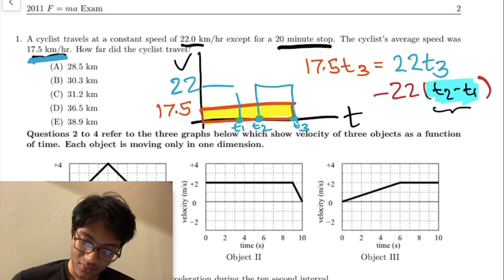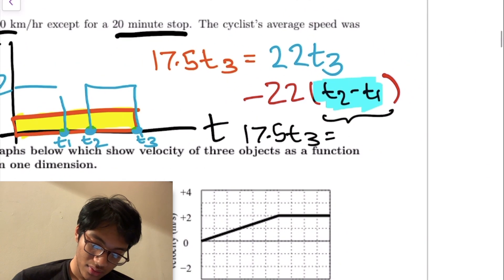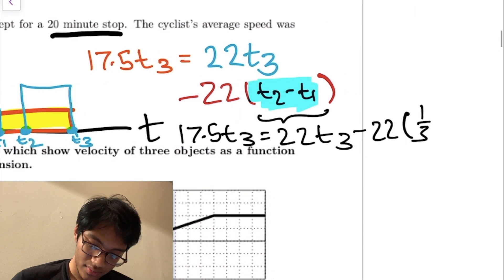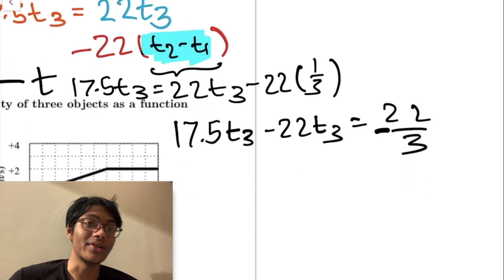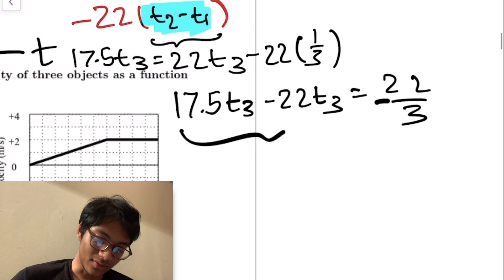That's going to give me 17.5 times t3 equals 22 times t3 minus 22 times one third. If I solve for t3, I'll get 17.5 t3 minus 22 t3 equals minus 22 over 3. By the way, there's no guarantee I'm going to get any of these questions right. Any questions I get wrong I'll be sure to show you the corrections.